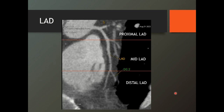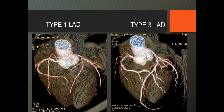This is important from the treatment point of view. You can see the proximal LAD where D1 comes out, the mid LAD where D2 comes out, and then the distal LAD. What is type 1 LAD? One which does not reach up to the apex of the heart. Type 3 LAD goes up to the apex, wraps around, and goes back. Type 1, type 2, and type 3 are the three types of LAD — these are more for descriptive purposes and don't have great clinical significance per se.